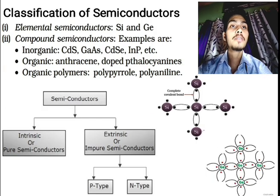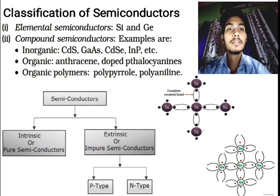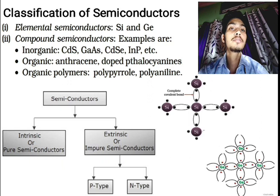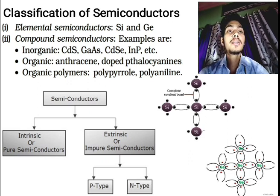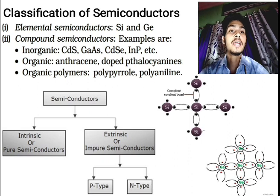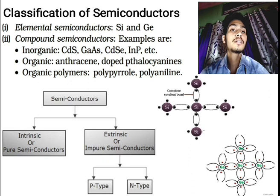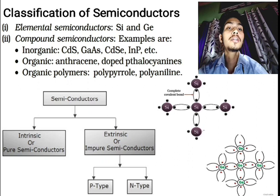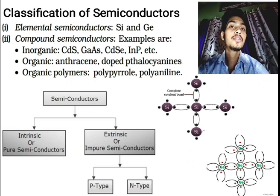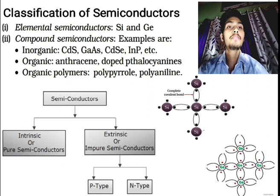Semiconductors are classified in different ways. Based on the flow chart, semiconductors are divided into two types: intrinsic semiconductor (pure semiconductor) and extrinsic semiconductor (impure semiconductor). Extrinsic semiconductors are further classified into p-type and n-type. As elemental semiconductors, silicon and germanium are the main examples.